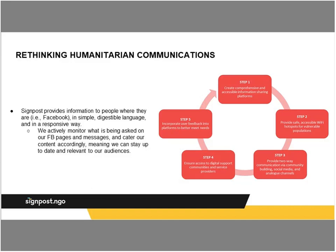In terms of our information-gathering process: step one is to create comprehensive and accessible information sharing platforms — we want to know where people are and what they're using, then adopt those platforms so they don't have to do extra work. We provide safe and accessible Wi-Fi so that as long as people have the tool, they can access the information. We then provide two-way communication via community building, social media, and analog channels, staying in constant communication with users about the type of content they need. We also ensure access to digital support communities and service providers, and we do not do case management — we're about empowerment and choice, providing information so users can act on it themselves. Finally, we cycle back, really focusing on user feedback to incorporate into platforms.